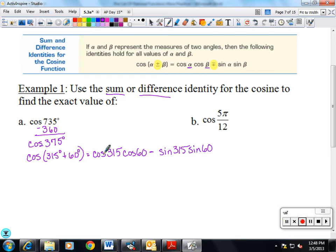Cosine of 315. 315 is a 45 degree angle in my fourth quadrant, so that's going to be a positive square root of 2 over 2. Cosine of 60 is 1 half. Sin of 315 is below the x-axis would be a negative square root of 2 over 2. Sin of 60 is a square root of 3 over 2.